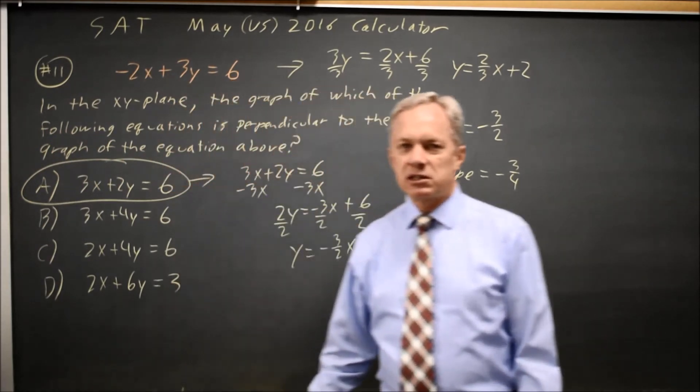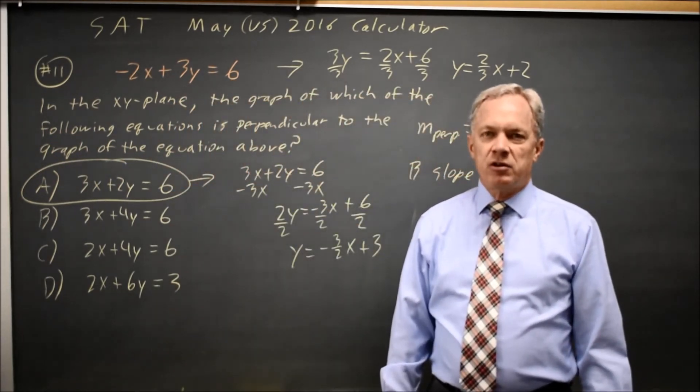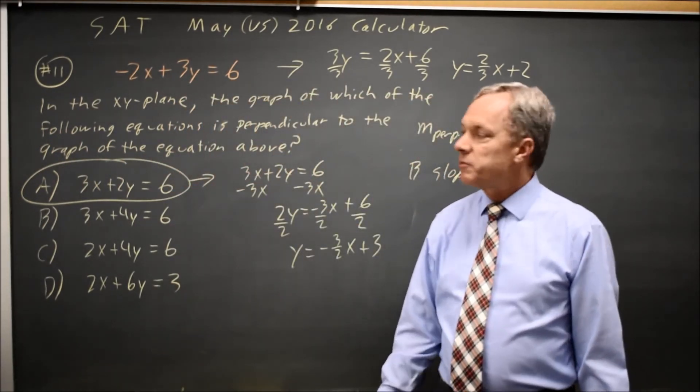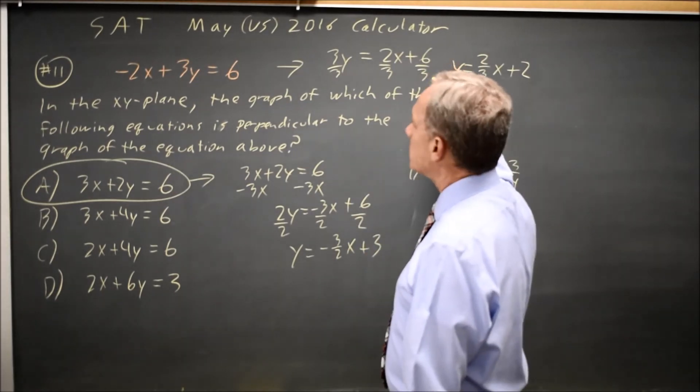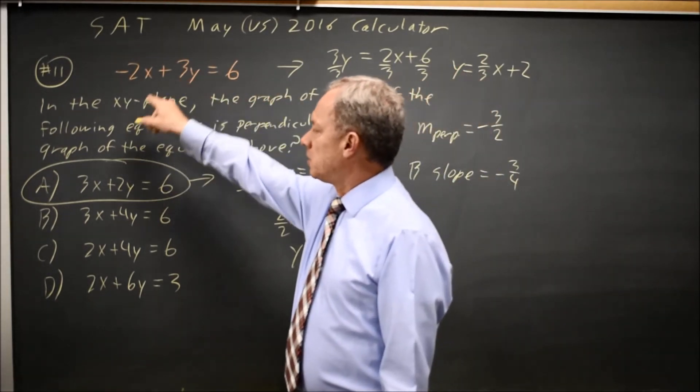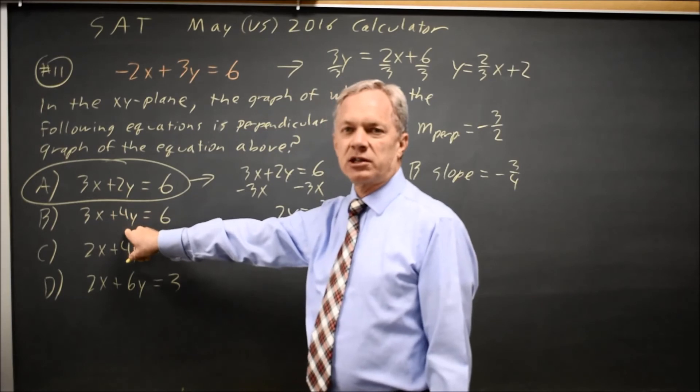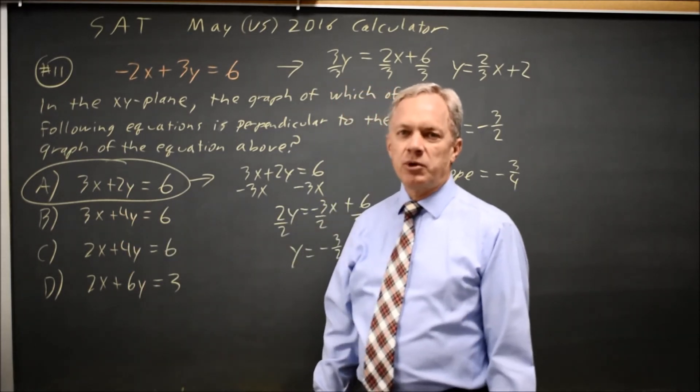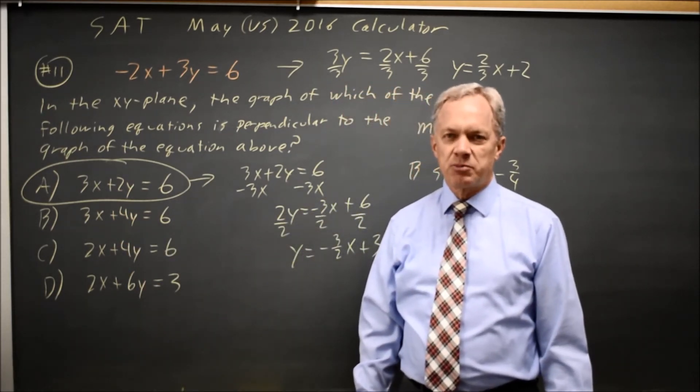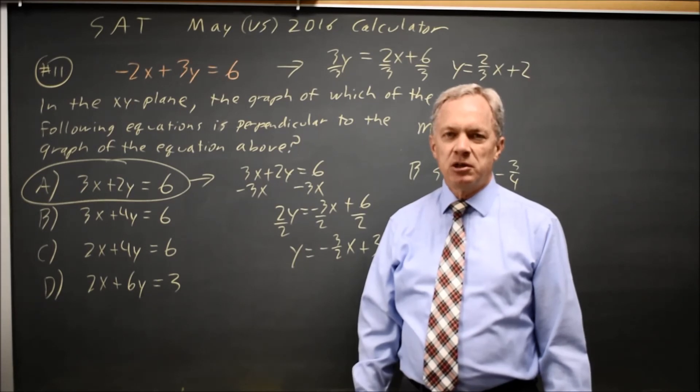That's two ways of finding it. If you don't remember what the perpendicular slope is, you can put them all into Y equals form. Graph the original, and then graph these one at a time, and look at which option looks perpendicular in your window when you hit zoom square.